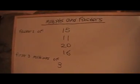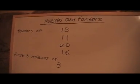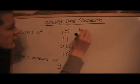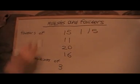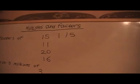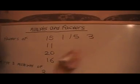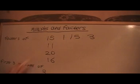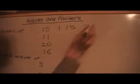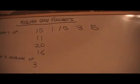I want to list the factors of 15. What can 15 be divided by? Any number can be divided by 1 and the number itself, so 1 and 15 are factors. Is 3 a factor? Yes, because 15 can be divided by 3. And also, 5 is a factor. So those are the factors of 15.